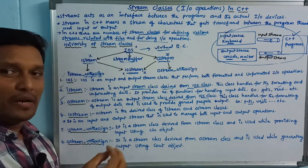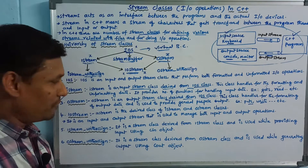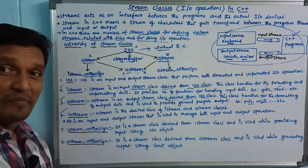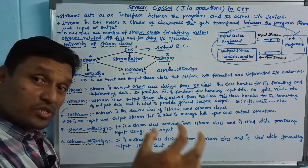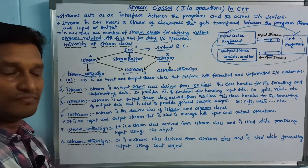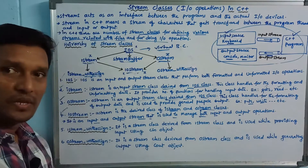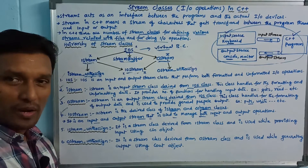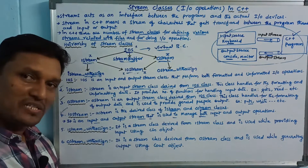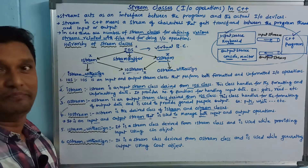If you want to display output data, you use the ostream object. Iostream is the derived class of both istream and ostream classes. It is an input and output stream used to manage both input and output operations. We include the iostream.h header file.